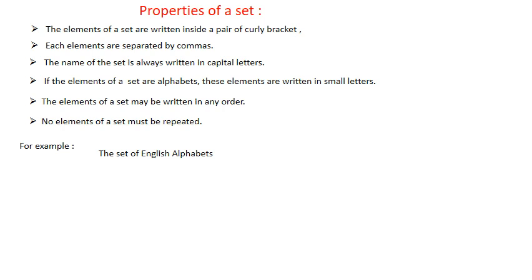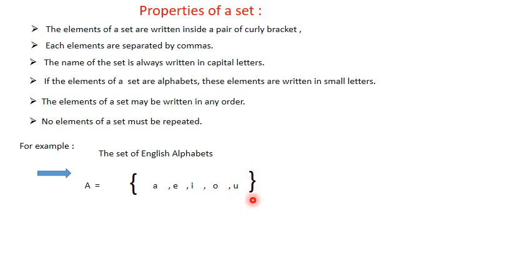Let us take our example of vowels of English alphabets. We give the set the name A, written in capital letter. Then we write all elements enclosed in curly brackets: {a, e, i, o, u}, each separated by commas. Order is not important - you can also write {a, i, e, u, o}. All five elements must be present, but not repeated.